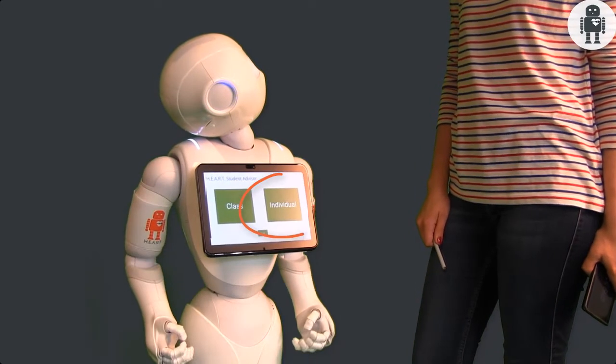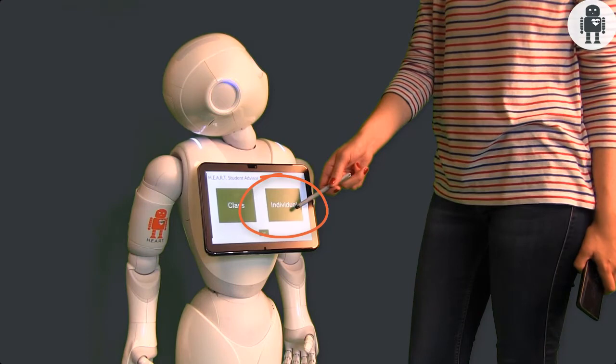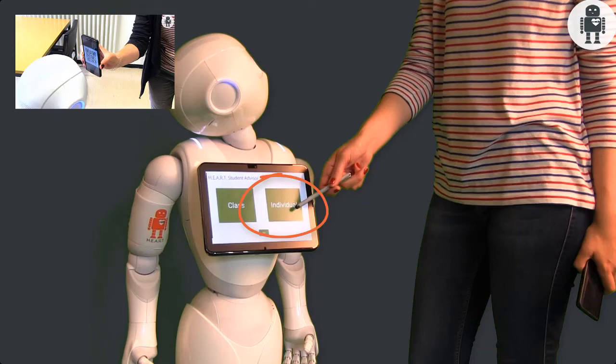Let's now look at the individual contact option. A click on individual allows the student to contact the robot using their private QR code.